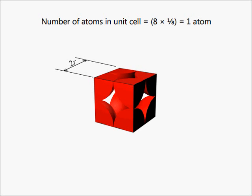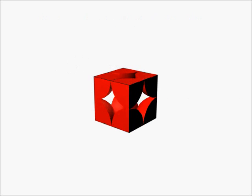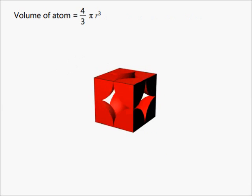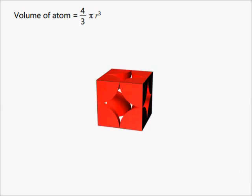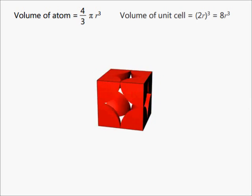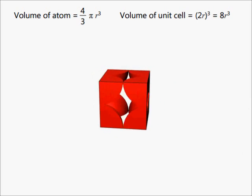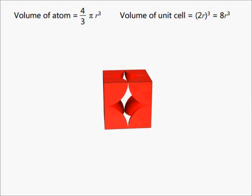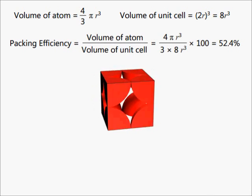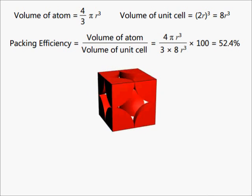The edge length of the unit cell is 2r, where r is the radius of the atom. Therefore, volume of atom is equal to 4/3 π r³, and volume of unit cell is equal to (2r)³, which is equal to 8r³. Therefore, packing efficiency is equal to 52.4%.